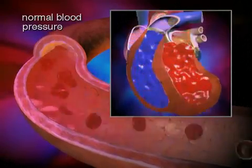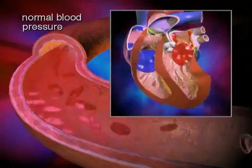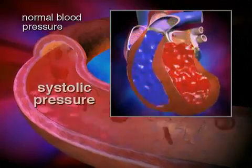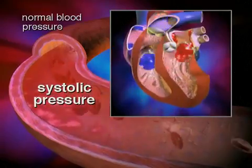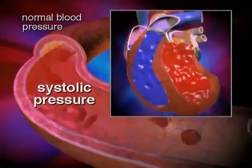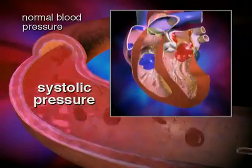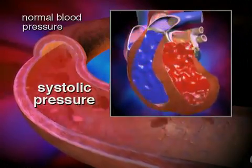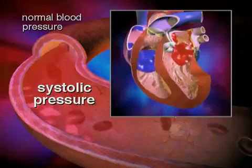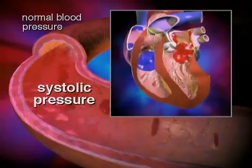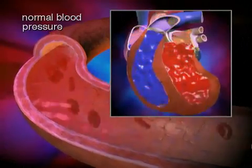There are two components of a blood pressure measurement. The first is the systolic pressure, which is recorded when blood pressure is at its maximum during contraction of the left ventricle.